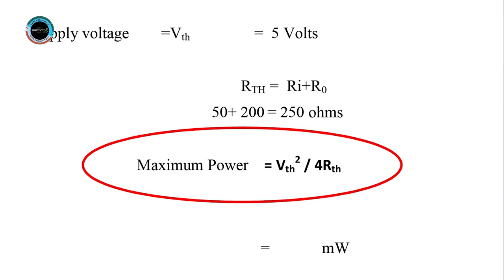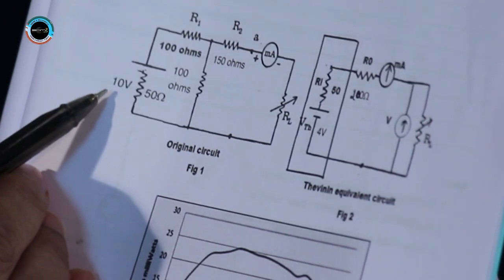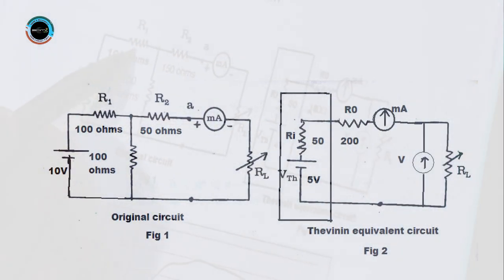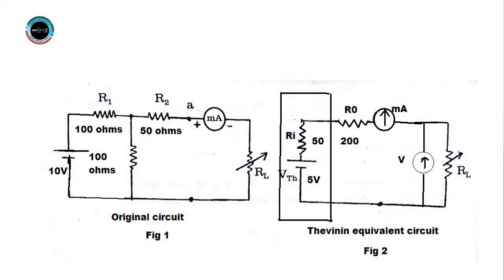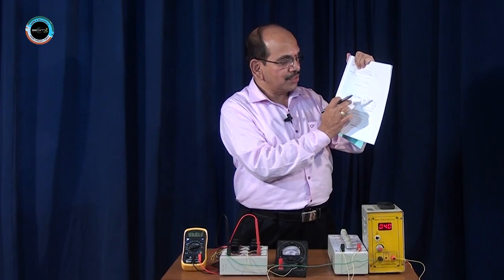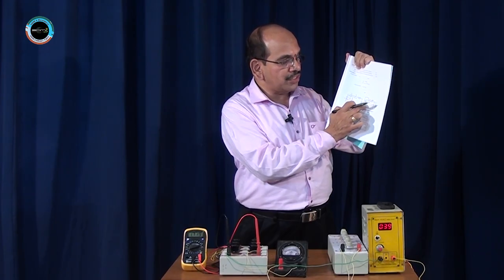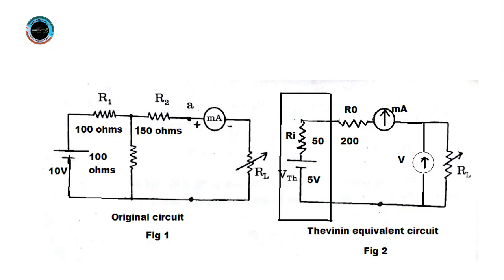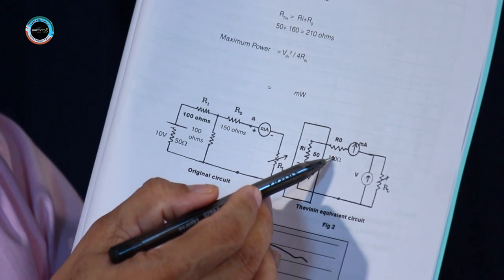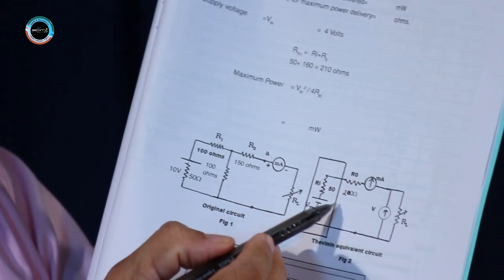Coming to the actual circuit: when given a circuit with a source voltage of 10 volts, internal resistance 50 ohms, and additional resistances of 100 ohms, 150 ohms etc., we draw its Thevenin equivalent — a voltage source with series resistance Rth. The Thevenin equivalent values for this circuit are: Vth = 4 volts, internal resistance 50 ohms, and Thevenin resistance 200 ohms, giving a total internal resistance of 250 ohms.